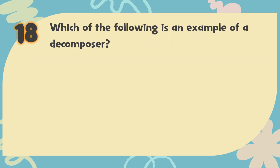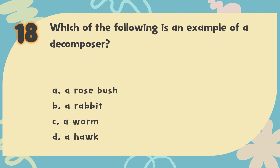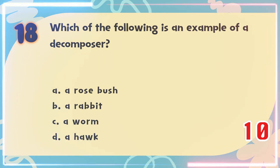Number 18: Which of the following is an example of a decomposer? The choices are: A. A rosebush, B. A rabbit, C. A worm, D. A hawk.